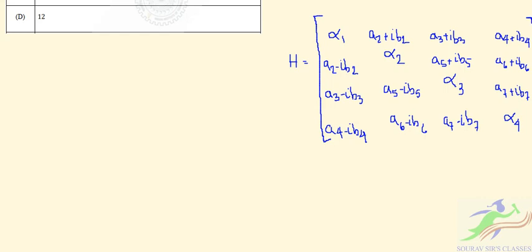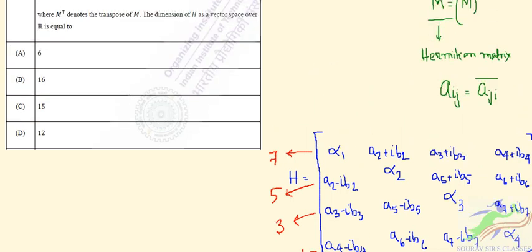Now we count the number of independent real parameters. In the first row we have alpha 1, a2, b2, a3, b3, a4, b4 — that is 7 elements. From the second row we get alpha 2, a5, b5, a6, b6 — that is 5 new elements. From the third row we get alpha 3, a7, b7 — that is 3. From the last row we get alpha 4 — that is 1. Summing: 7 plus 5 plus 3 plus 1 equals 16. So the dimension of H as a vector space over the reals is 16, and the correct option is B.